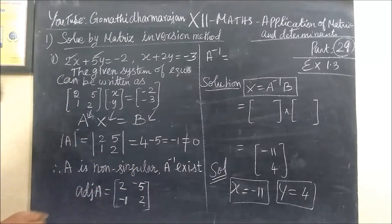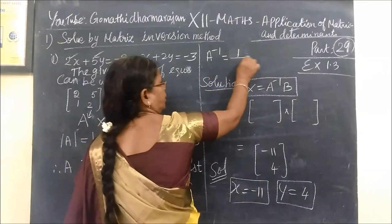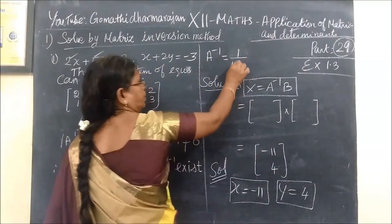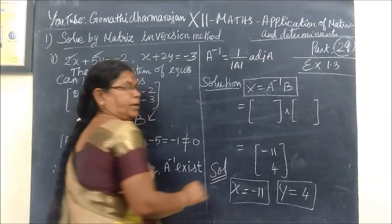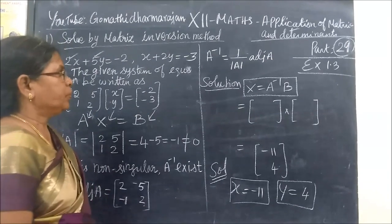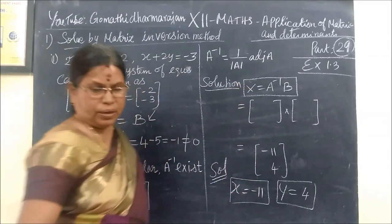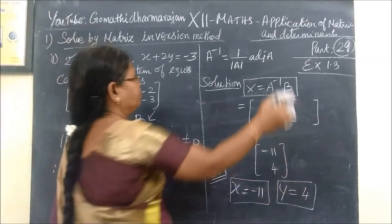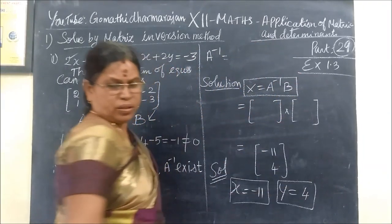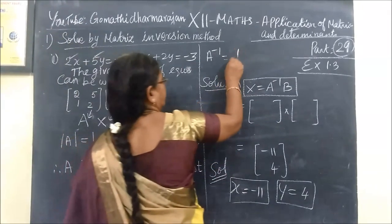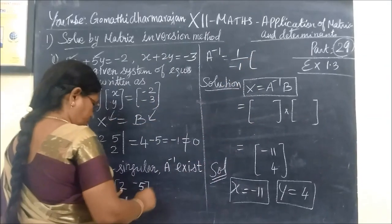Learn how to write A inverse. As you can write it, the prices are going to be performed — plus 5, minus 5, plus 1. A inverse equals 1 by determinant A into adj(A). Adj(A) will be applied.